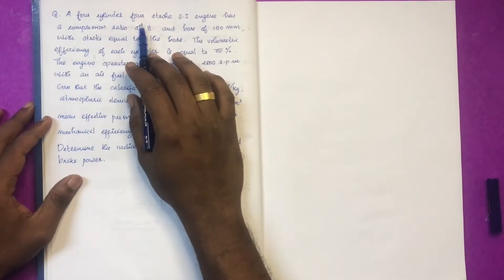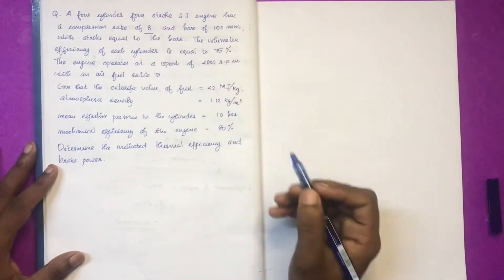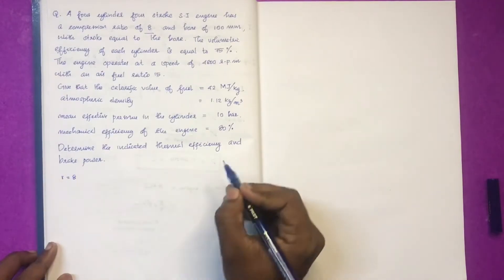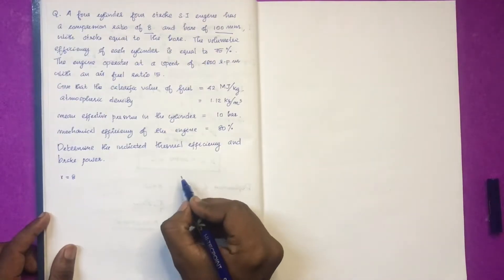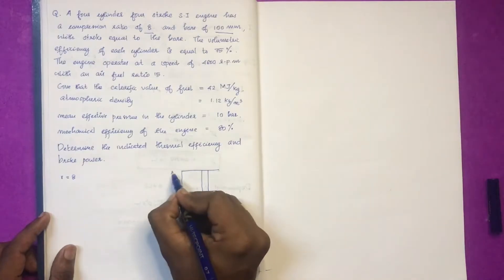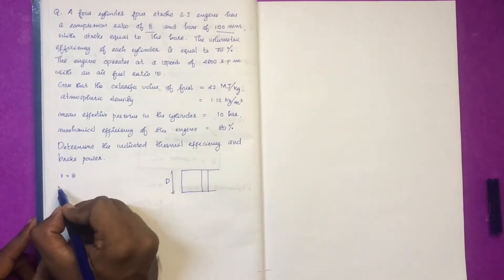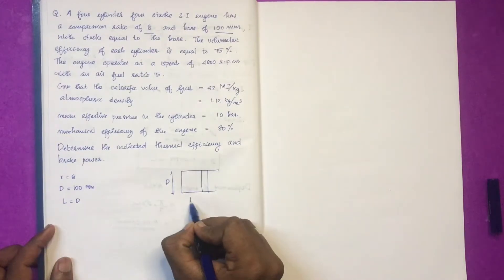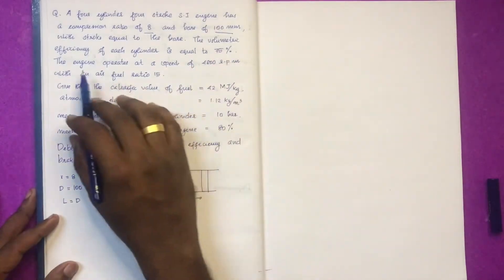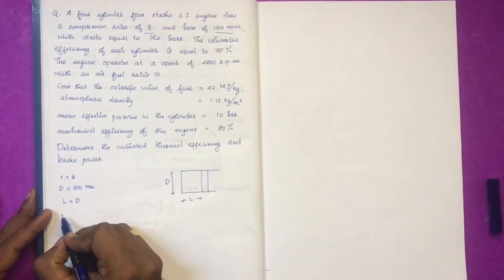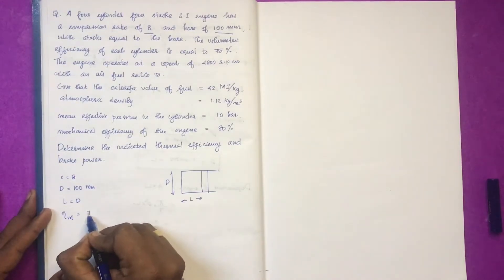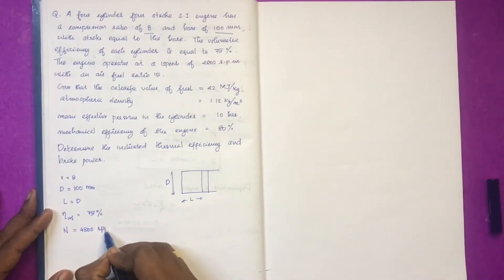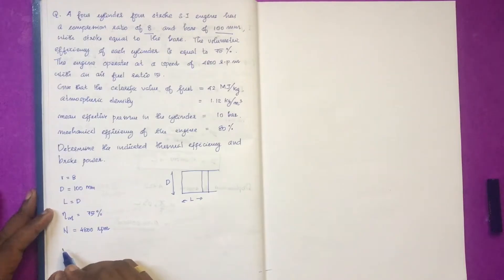A 4-stroke SI engine has a compression ratio of 8, a bore diameter of 100 mm (D = 100 mm), with stroke equal to bore (L = D). The volumetric efficiency of each cylinder is equal to 75%. The engine operates at a speed of 4800 RPM, with an air-fuel ratio of 15.